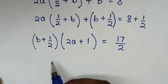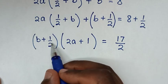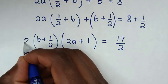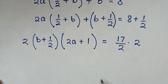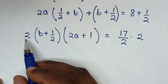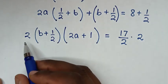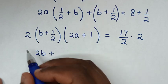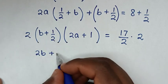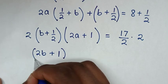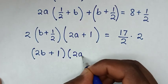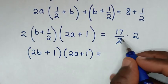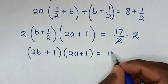Then in the next step, to remove the fractions — the denominator of 2 here and the denominator of 2 here — we will multiply by 2 on both sides. Then this 2 will multiply through: 2 times b is 2b, then plus 2 times ½, this and this will cancel, so it will be plus 1, bracket. Then (2a + 1) bracket is equal to — this 2 will cancel this 2 — so it will be 17.